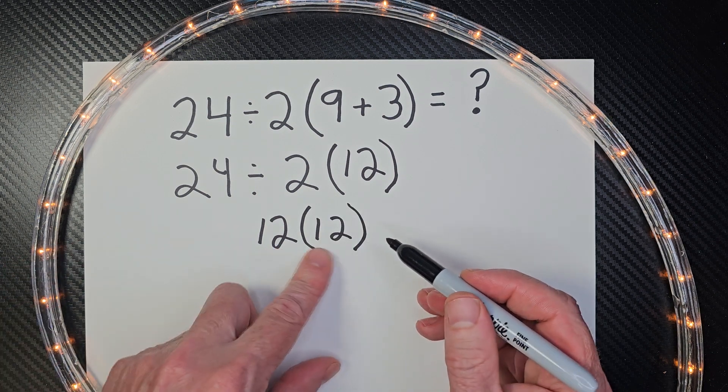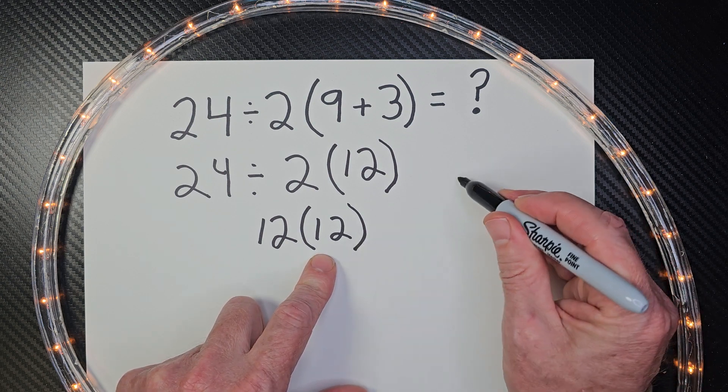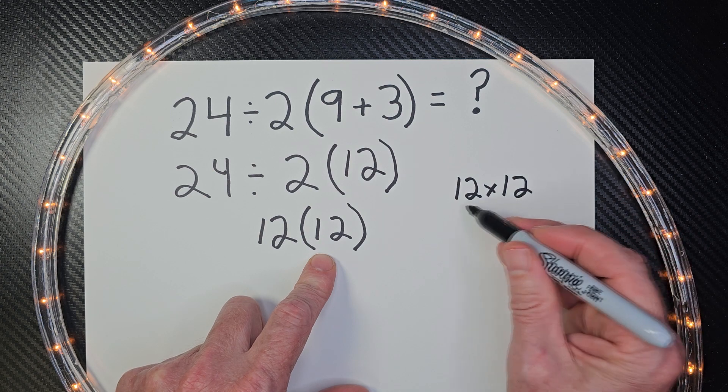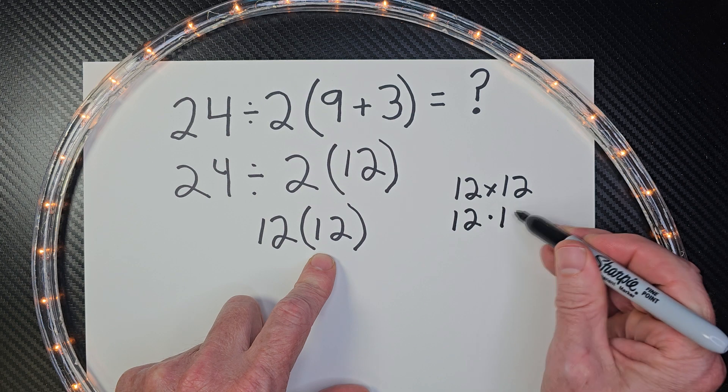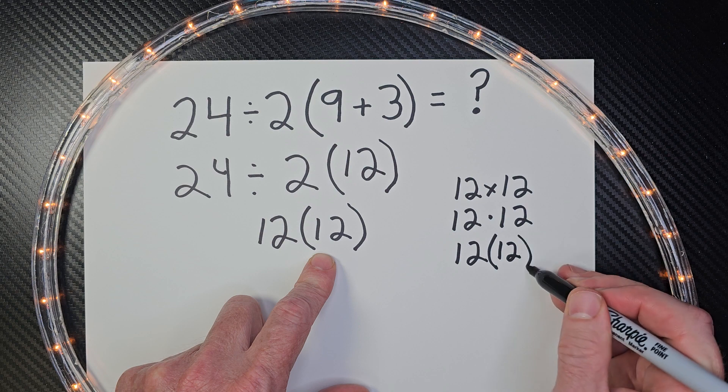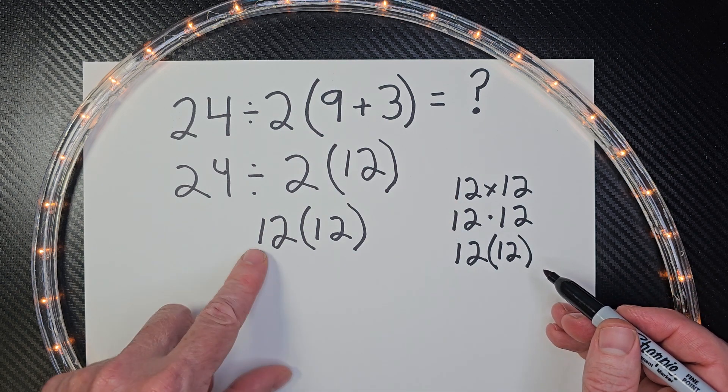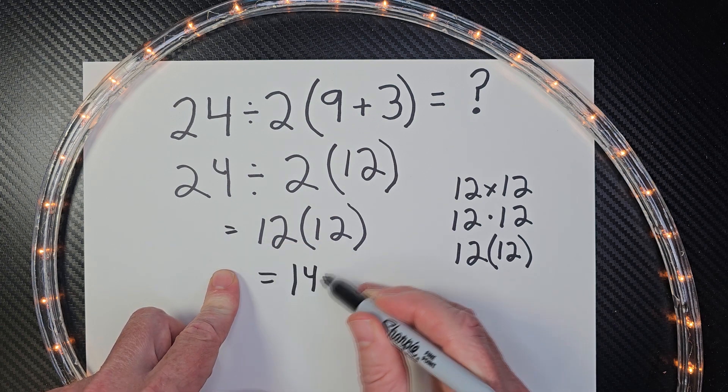Now this is kind of interesting if you don't know about this. When we do multiplication, I can go 12 times 12. That's multiplication of 12 times 12. This is also 12 times 12. This is also 12 times 12. So all these are the same thing. So 12 times 12? 144.